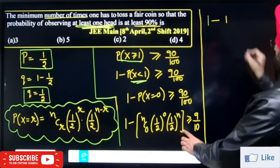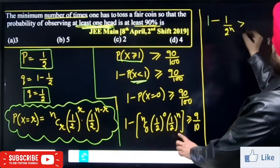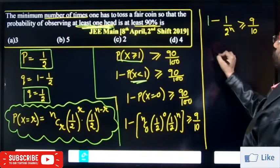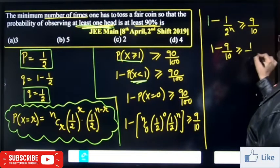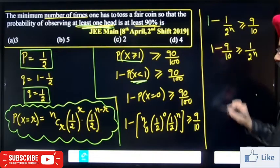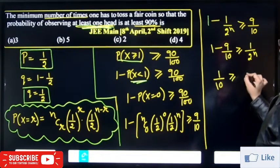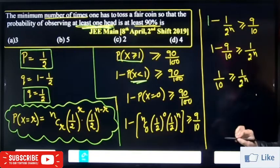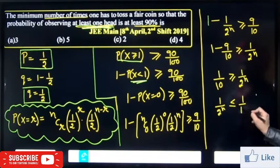Simplifying — since nC0 = 1 and (1/2)^0 = 1 — we get: 1 minus (1/2)^n greater than or equal to 9 by 10, which means (1/2)^n must be less than or equal to 1 by 10.